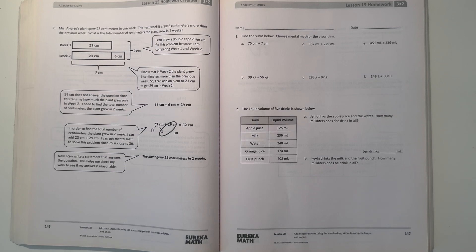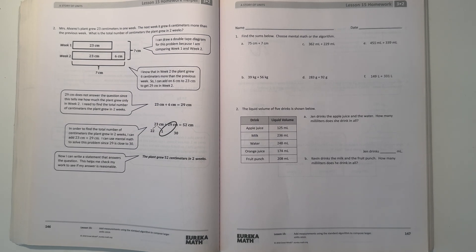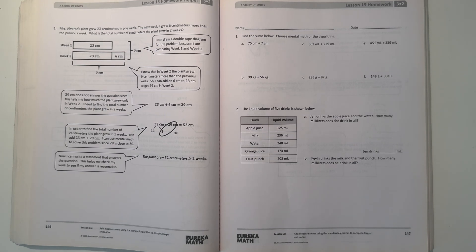Hey guys, today I'm doing the Eureka Math Grade 3 Module 2 Lesson 15 homework, so let's get started. Number one, find the sums below, choose mental math or the algorithm.